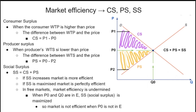Moving on to market efficiency — this is very important to remember because it connects to later topics. Consumer surplus occurs when a consumer's willingness to pay (WTP) is higher than the price. The difference between willingness to pay and price equals consumer surplus — shown as the triangle between P1 and P0 on the graph. Then we have producer surplus: when the supplier's willingness to supply is lower than the price, with the difference being P0 minus P2.